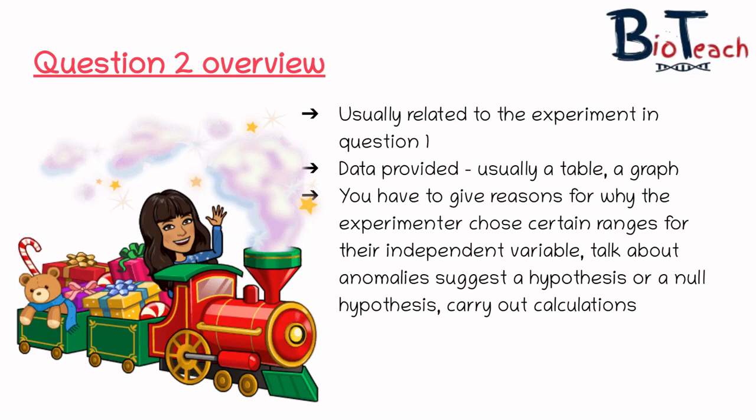Usually for question two you're given some data, so it could be in the form of a table or a graph, and the questions related to this part is for you to give reasons why the experimenter chose certain ranges for their independent variables, talk about things like anomalous results, you may have to suggest a hypothesis or even a null hypothesis, and you may be required to carry out calculations or add things into your graph that they've provided you.